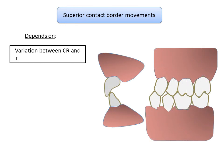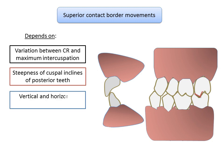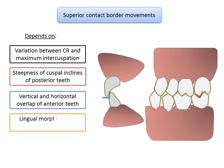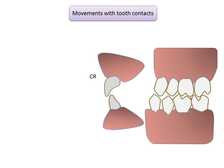The superior contact body movements of the occluding surfaces of teeth depend on five factors: the amount of variation between centric relation and maximum intercuspation, the steepness of the cuspal inclines of posterior teeth, the amount of vertical and horizontal overlap of anterior teeth, the lingual morphology of maxillary anterior teeth, and the general interarch relationships of the teeth. Throughout this entire body movement, tooth contact is present. Initial tooth contact in terminal hinge axis or centric relation occurs between the mesial inclines of maxillary teeth and distal inclines of mandibular teeth.